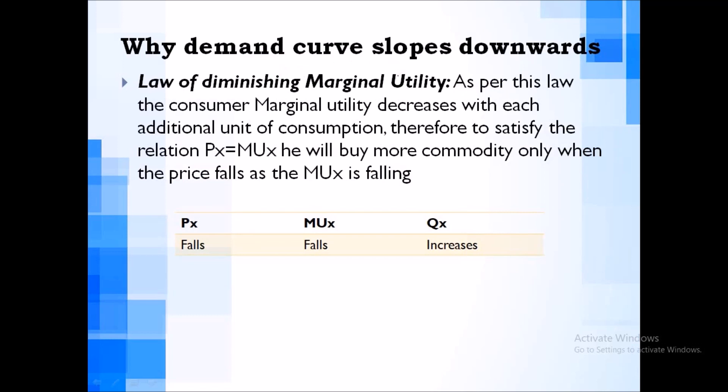The first reason is the Law of Diminishing Marginal Utility, which we covered in the first lectures. As per this law, the consumer's marginal utility decreases with each additional unit of consumption. Meaning, if we increase consumption, marginal utility keeps falling.